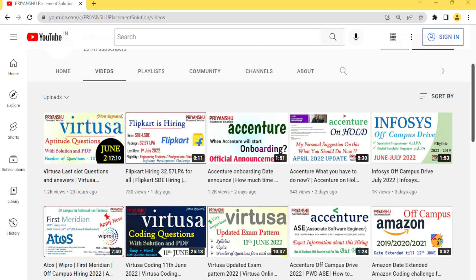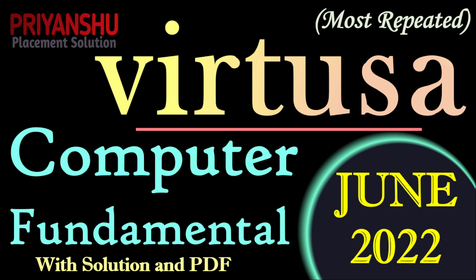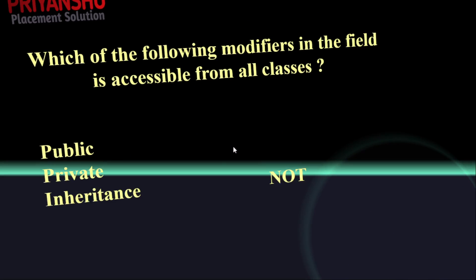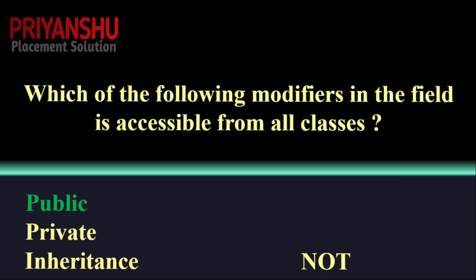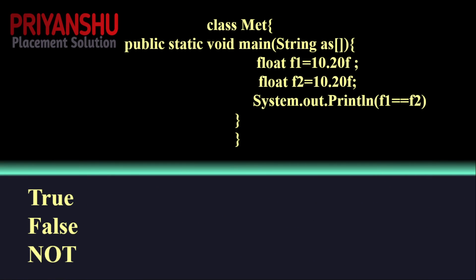Let's start the first question: which of the following modifiers in a field is accessible from all classes? Pause the video and try it from your side. The correct answer is public, because if our class is public then we can use it anywhere in our code.